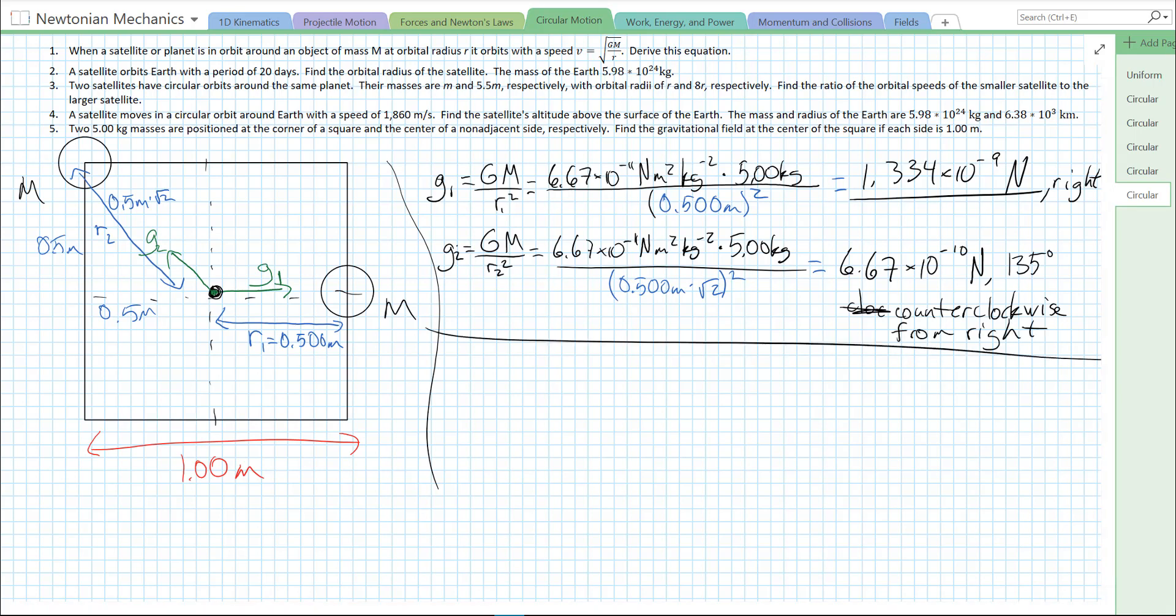Now, if we want to find the net gravitational field, we have to add these two vectors up. So, we need to break them into components. G1 is already broken into its components. It's just to the right.